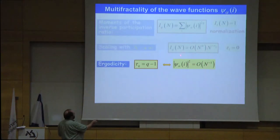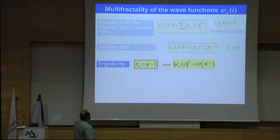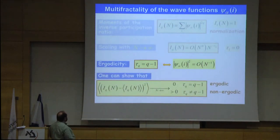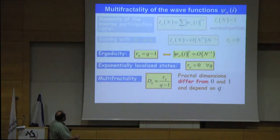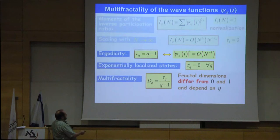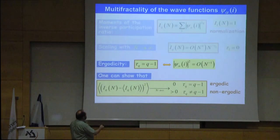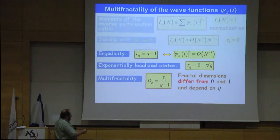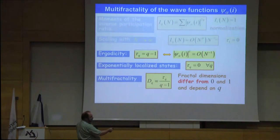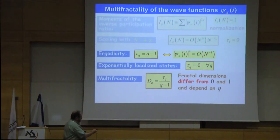In an ergodic state, all |ψ|² are of the same order of magnitude — of order 1/N — so τ_q = q − 1. For localized states, all τ_q are equal to zero. In general, one can introduce fractal dimensions D_q as the ratio of the actual value of τ_q to q − 1. In non-ergodic states, these fractal dimensions are different from zero and from one, and depend on q.